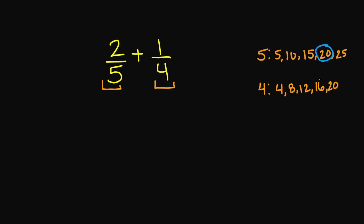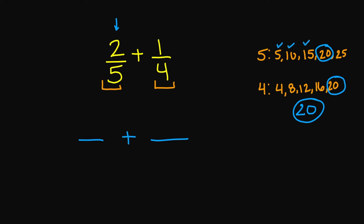I have a 20 here for the 5 and I also have a 20 here for my 4, so I can use the number 20 for my new denominator. Let's go back to my original problem and look at the 2 over 5. We need to get the number 20 in our denominator. How can I get 20 in my denominator if I have a 5? We just checked — 5 times 4 is going to give me 20.